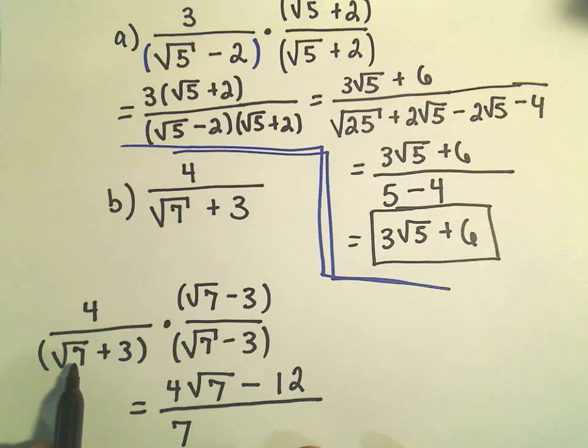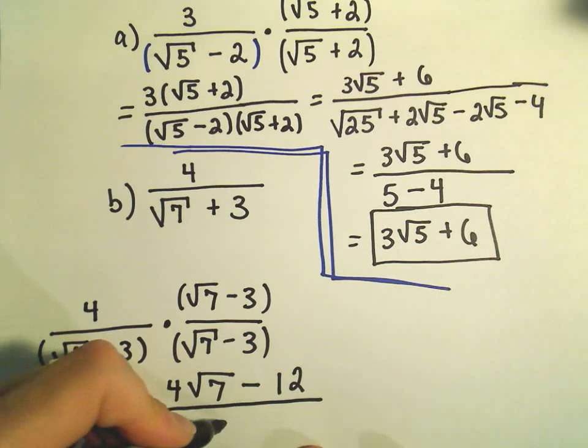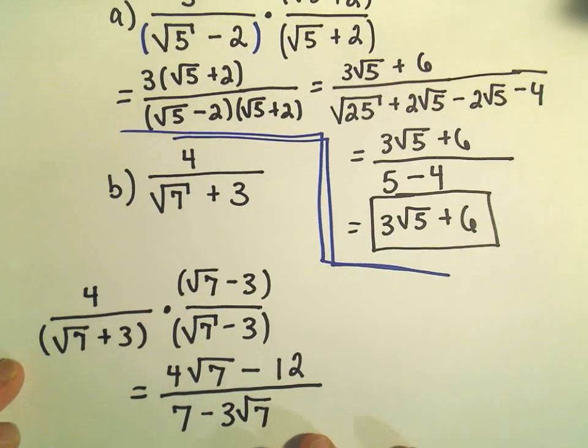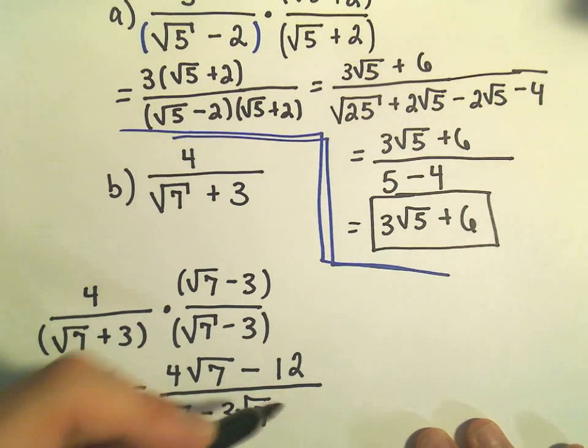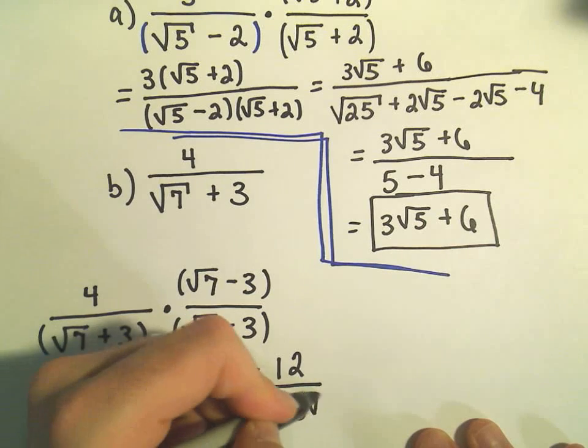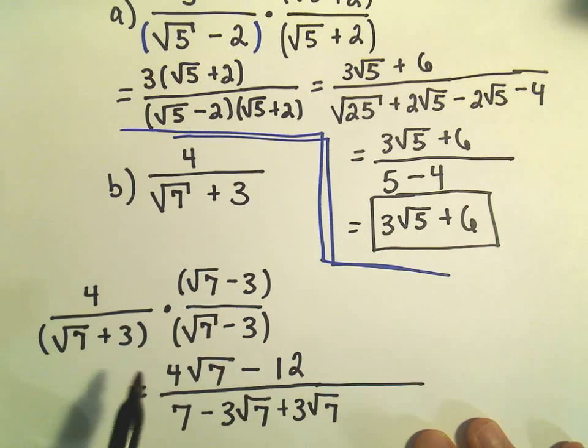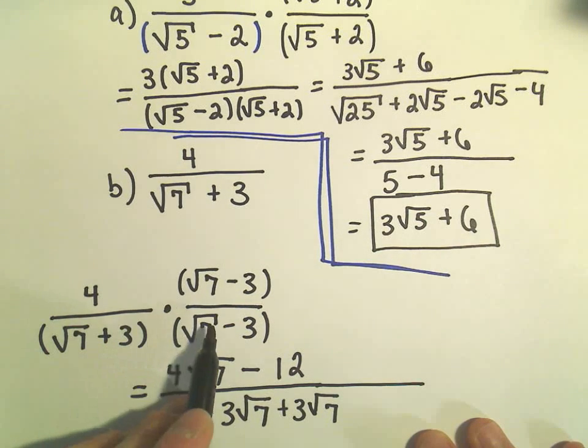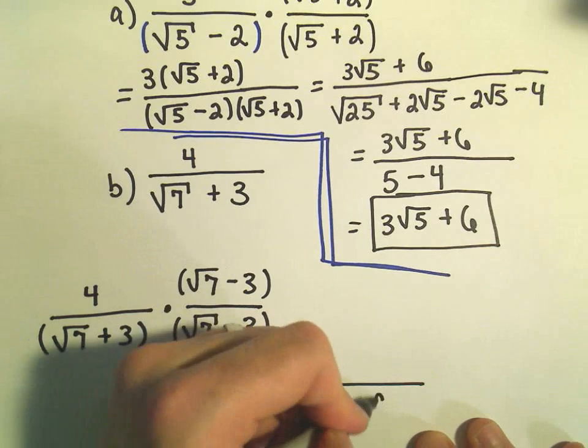I'll have a root 7 times negative 3, so that's negative 3, the square root of 7. I'm going to have a positive 3, square root of 7. And then, when I take my positive 3 and my negative 3, I'm going to get a negative 9.